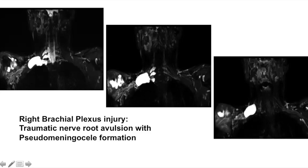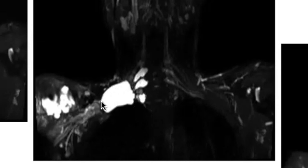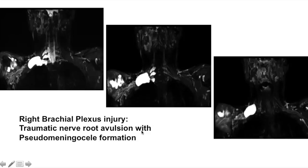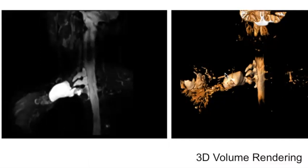These meningoceles are coalescing to form a large pseudomeningocele sac, and the nerves are retracted and edematous. We can calculate the distance of retraction of the nerves from their insertion into the cord, giving the surgeon a fair idea of the surgical procedure required. This is a classical case of right brachial plexus injury with traumatic nerve avulsion and pseudomeningocele formation. The 3D volumetric images nicely show the pseudomeningoceles and the retracted edematous nerves of the brachial plexus.